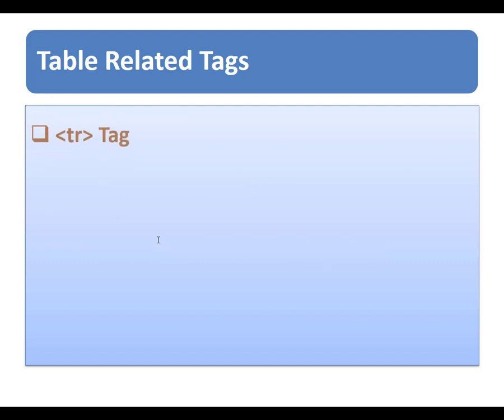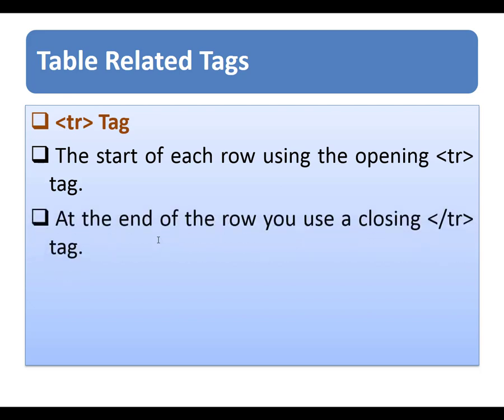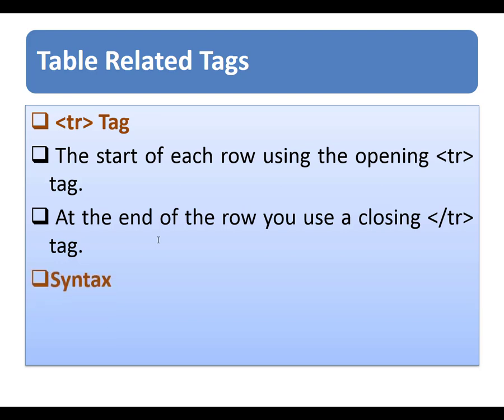The next tag is the tr tag. It indicates the start of each row using the opening tr tag, then it is followed by one or more table data elements. At the end of the row you use the closing tr tag. The syntax follows the same pattern.